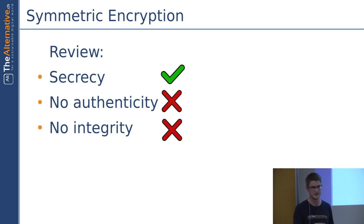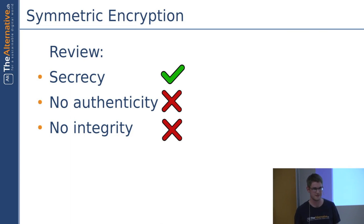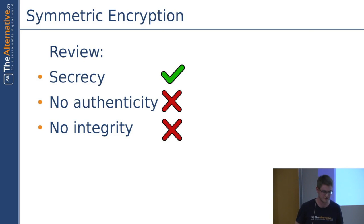We also do not have any integrity, because from the sender to the recipient, anybody in between can modify the email. And if it is not a plain English text, you are not able to see whether the content has been modified once you decrypt it. There are situations where it is more difficult to determine whether the message has been modified. So plain symmetric encryption does not give us any integrity.